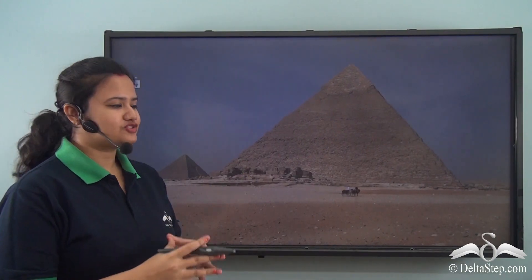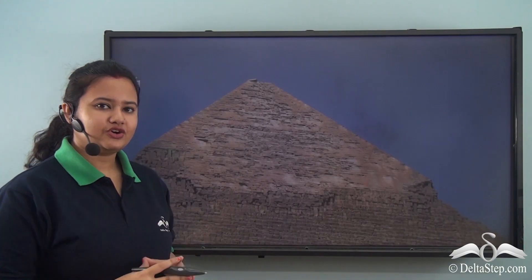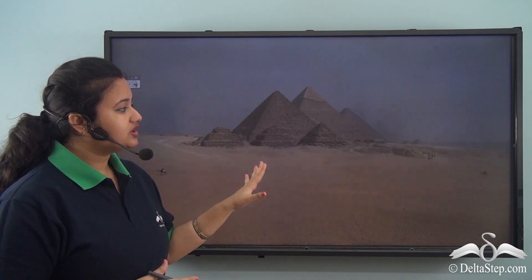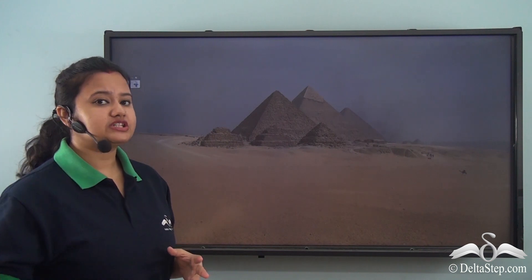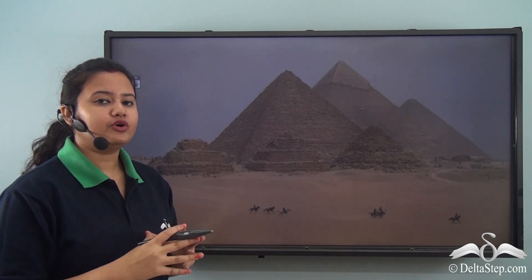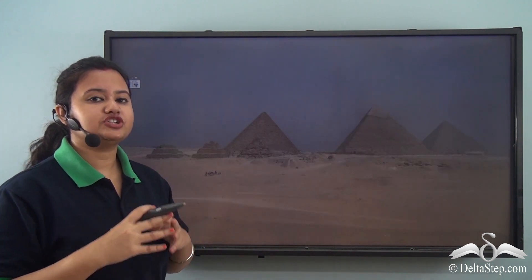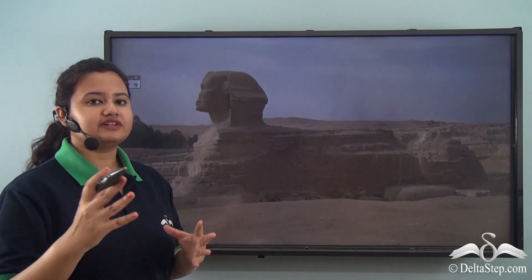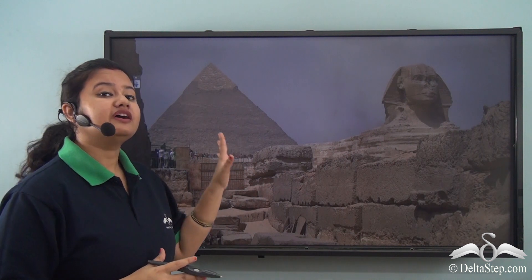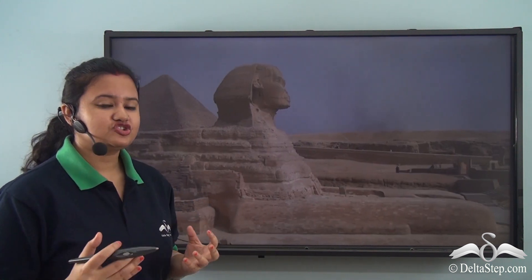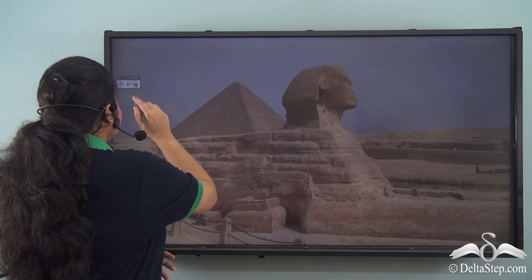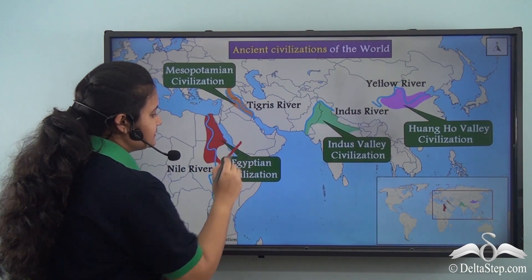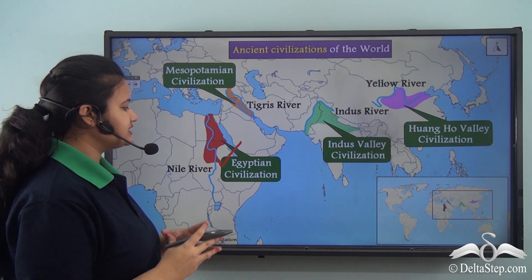Look at these amazing structures. Do you know what they are called? Yes, they are pyramids. These conical structures were built in ancient times to preserve the dead bodies of pharaohs or Egyptian kings. So pyramids belong to the Egyptian civilization and they are the representation of Egyptian architecture and culture.